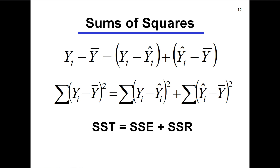When we square (a + b), we get a squared plus 2ab plus b squared, but that 2ab cross-product term vanishes here. The left-hand side — sums of squares total — measures the variation of observed values y about their mean; it has nothing to do with the model. It can be broken into two pieces: sums of squares error, the squared differences between observed and fitted values, and sums of squares for regression.